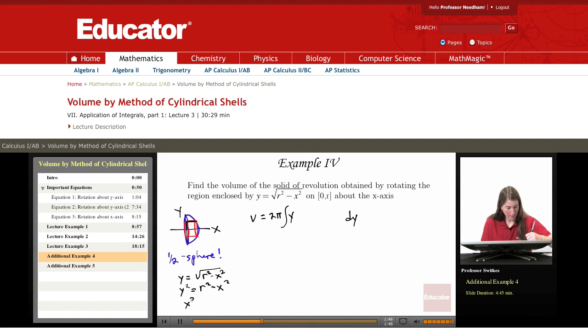So I'm squaring both sides. x squared equals r squared minus y squared. x equals plus or minus radical r squared minus y squared. And we're on the positive piece of this radical because we're looking at positive x values. So the height or length of this cylindrical shell is an x value given by radical r squared minus y squared.